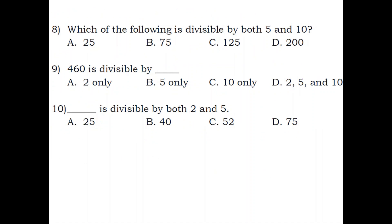Number 8. Which of the following is divisible by both 5 and 10? A. 25. B. 75. C. 125. D. 200. Answer: D. 200.